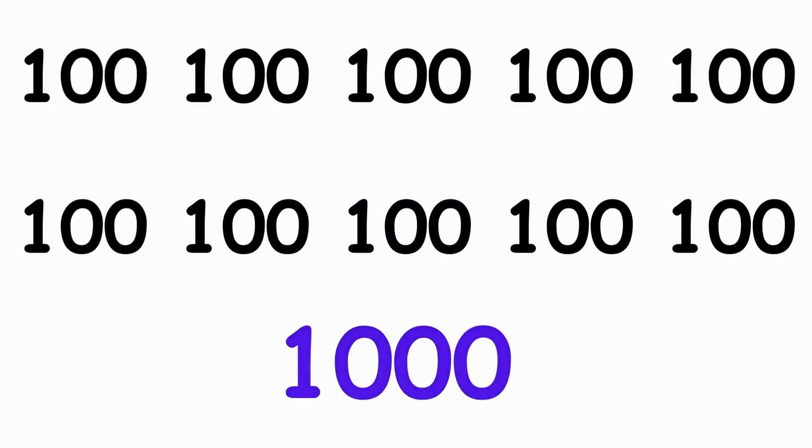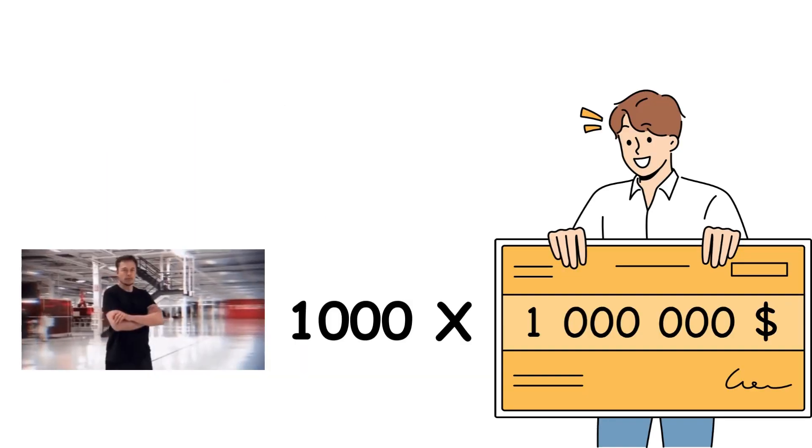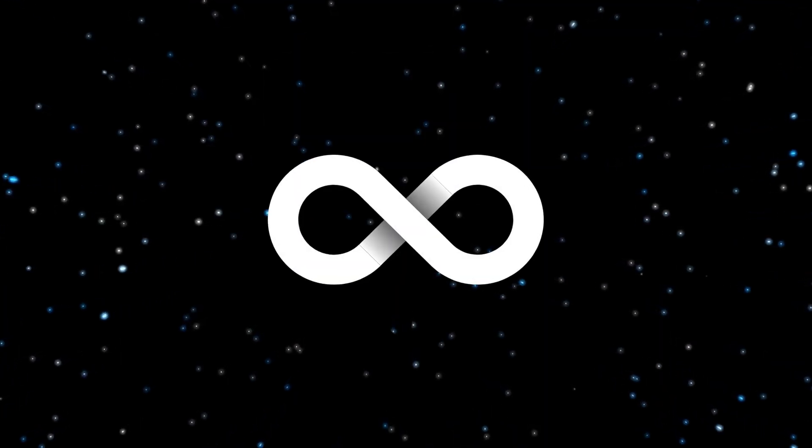10 tens make 100, 10 one hundreds make a thousand, and a thousand thousands make a million, and a thousand millions make a billion. These go on forever without end. The concept of endlessness is called infinity.